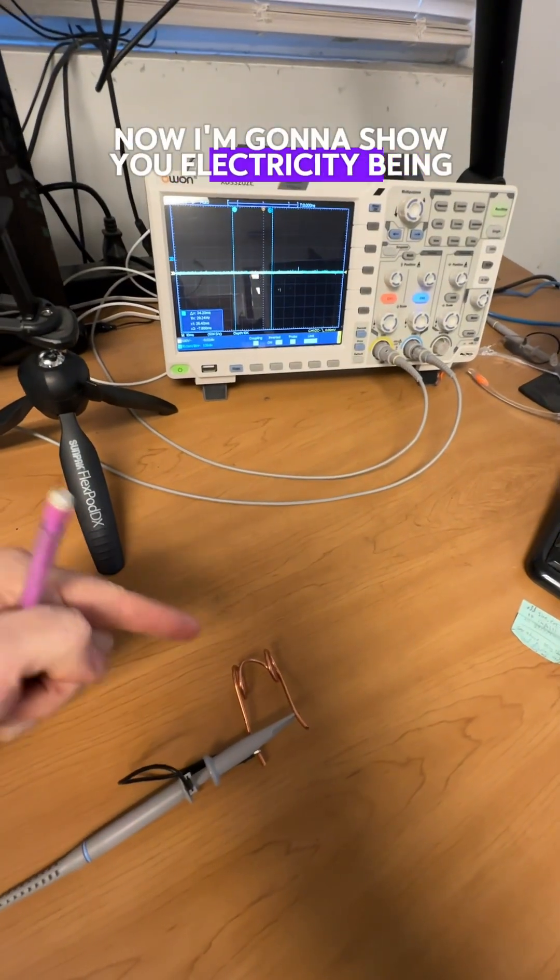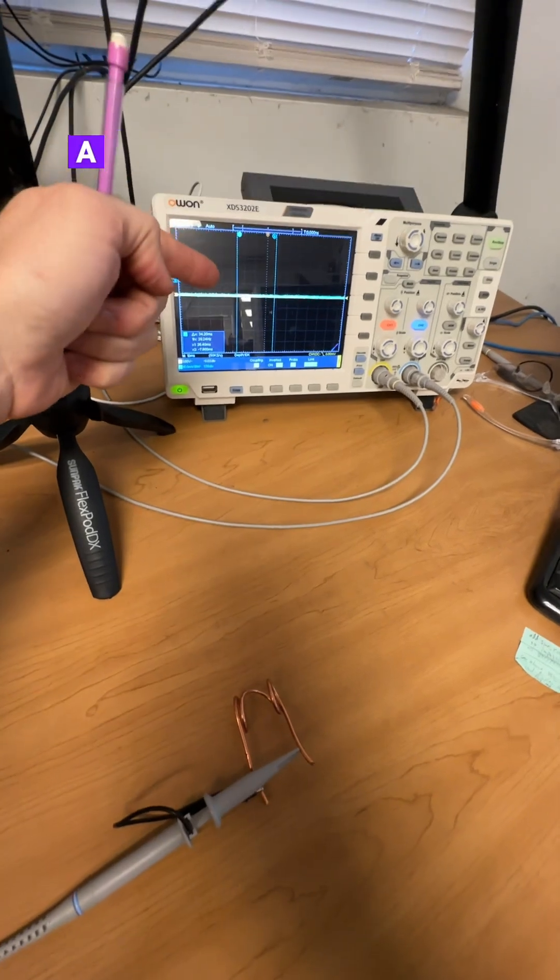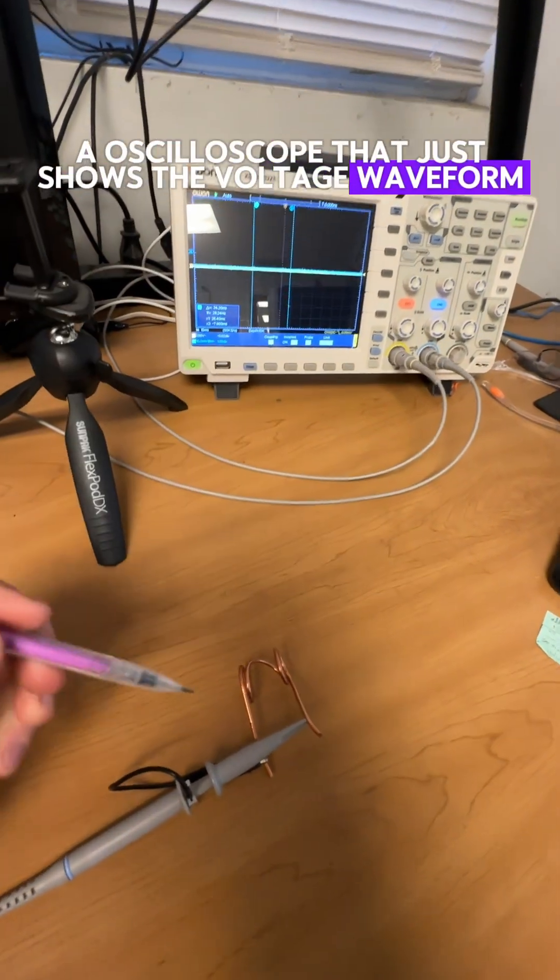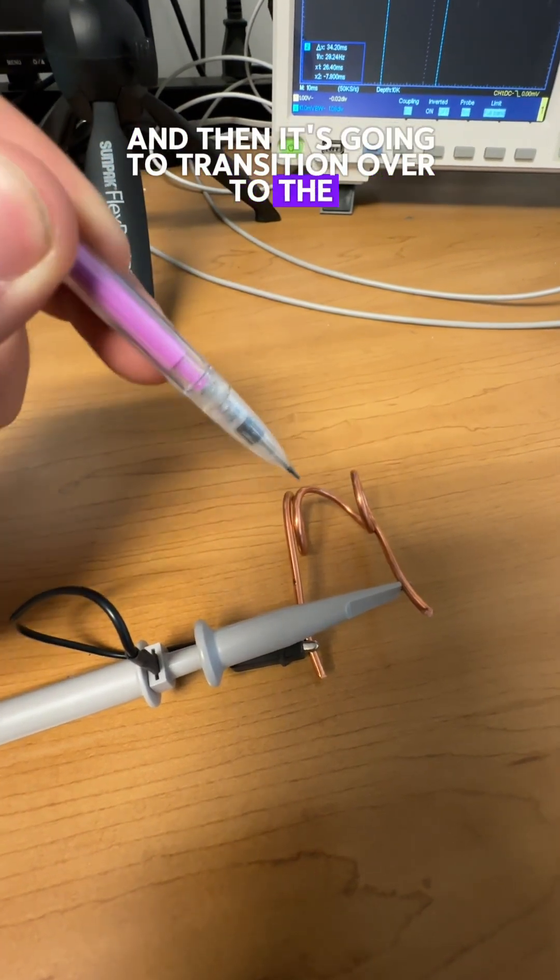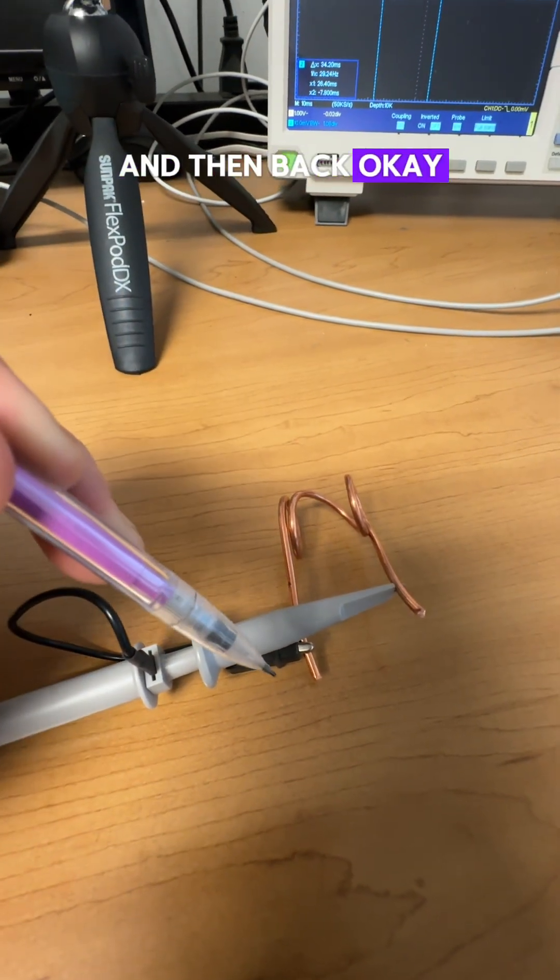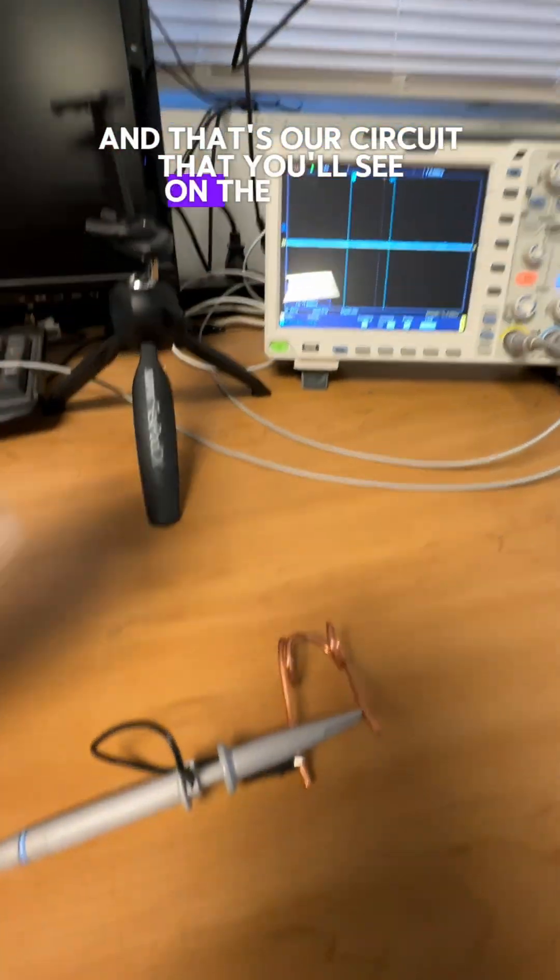Now I'm going to show you electricity being generated on this oscilloscope that just shows the voltage waveform. This current is just going to flow around one coil and then it's going to transition over to the other coil and then back. And that's our circuit that you'll see on the oscilloscope.